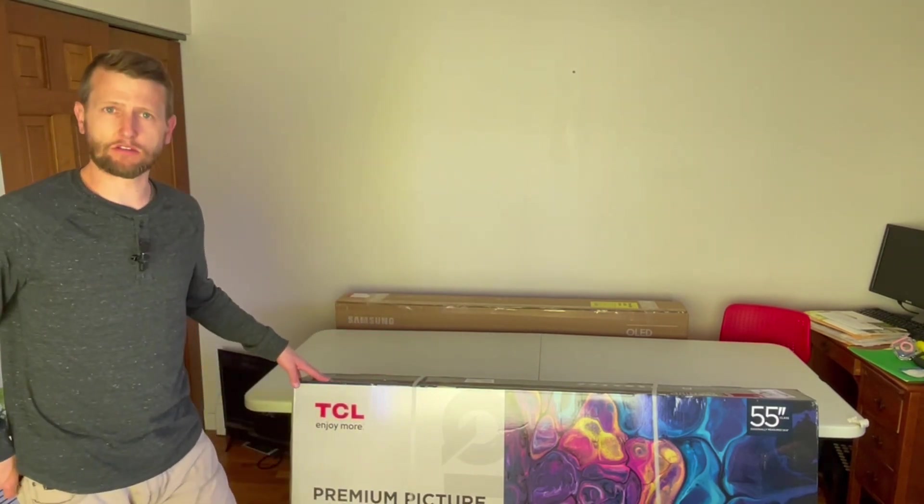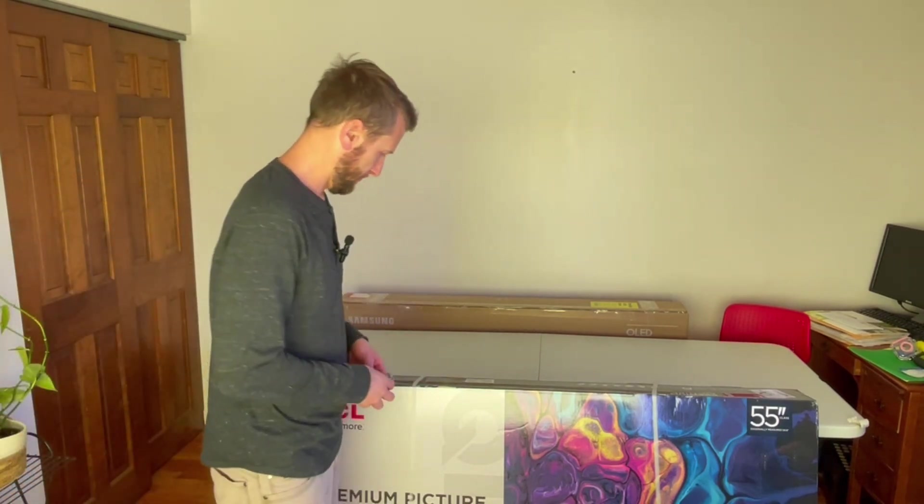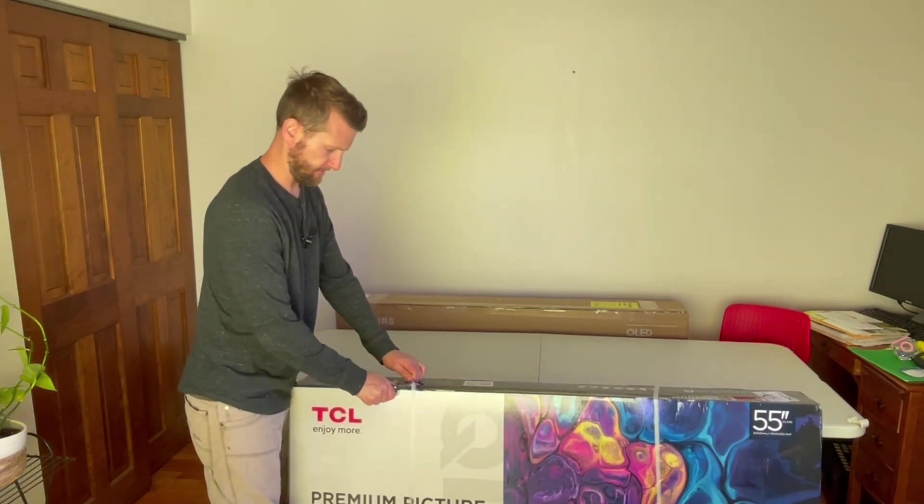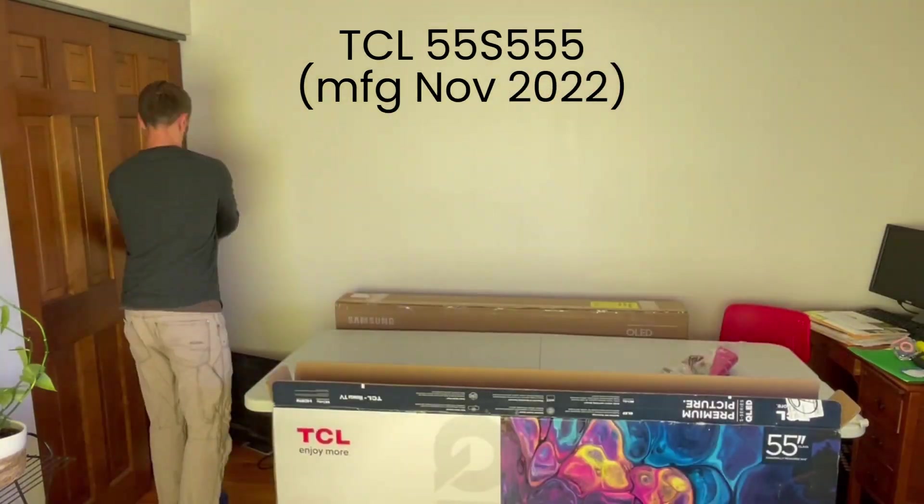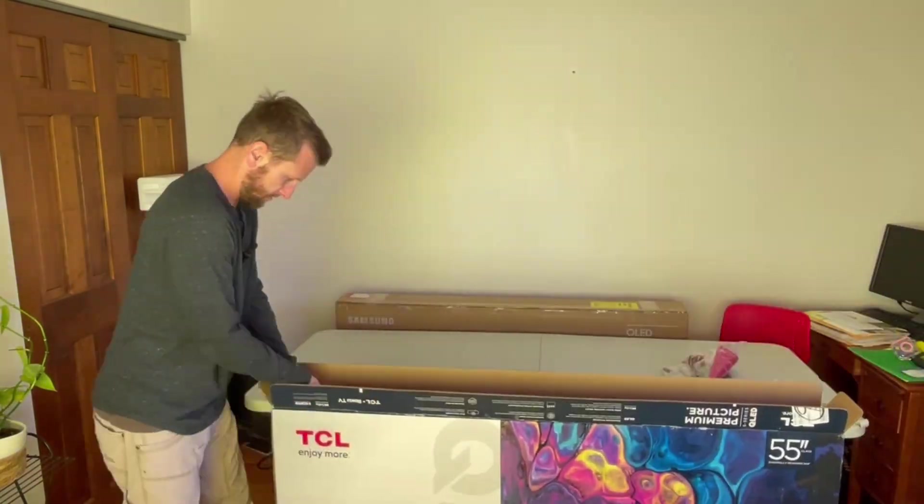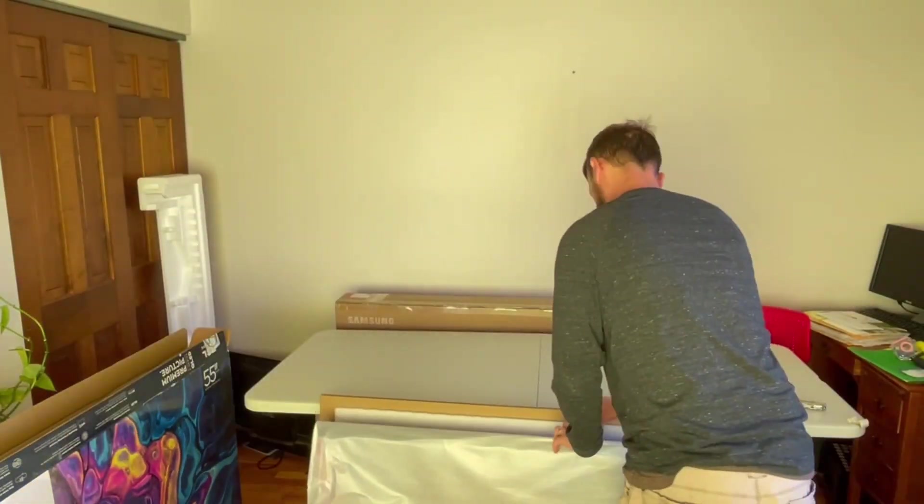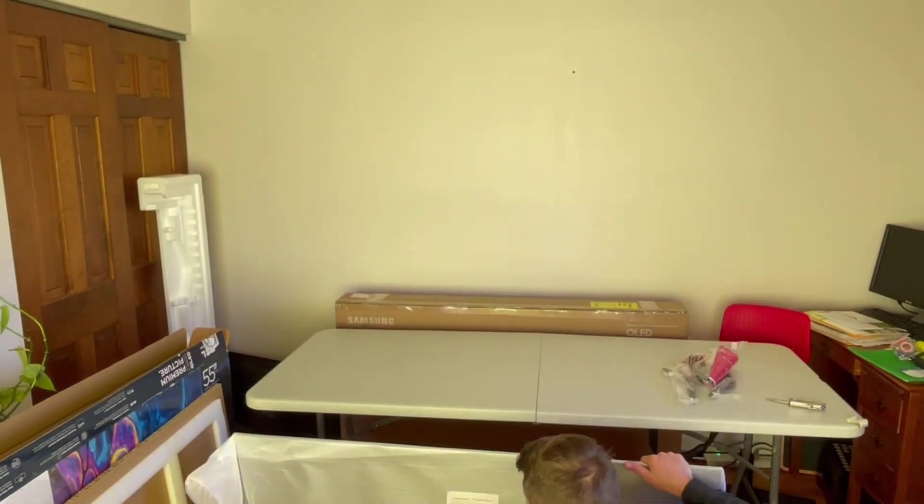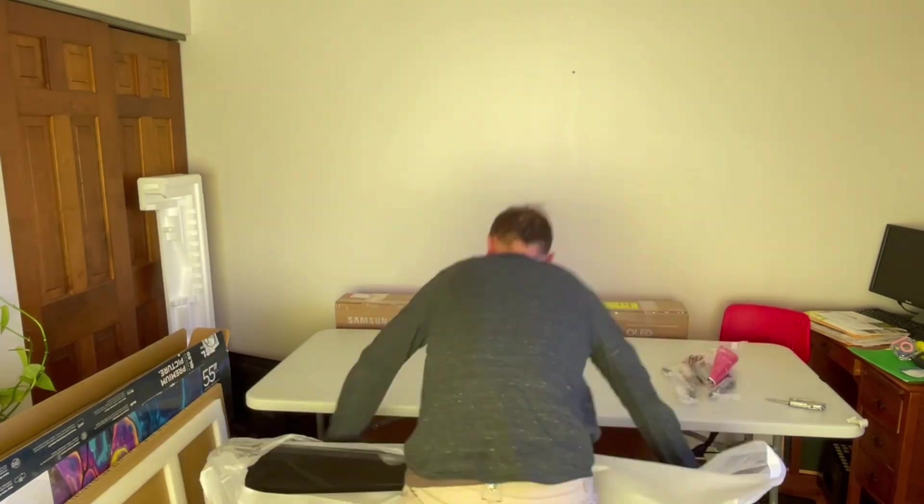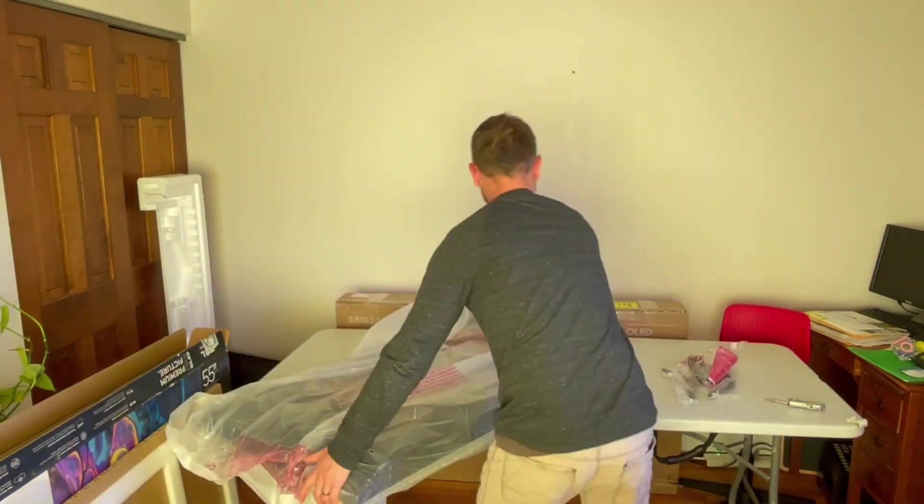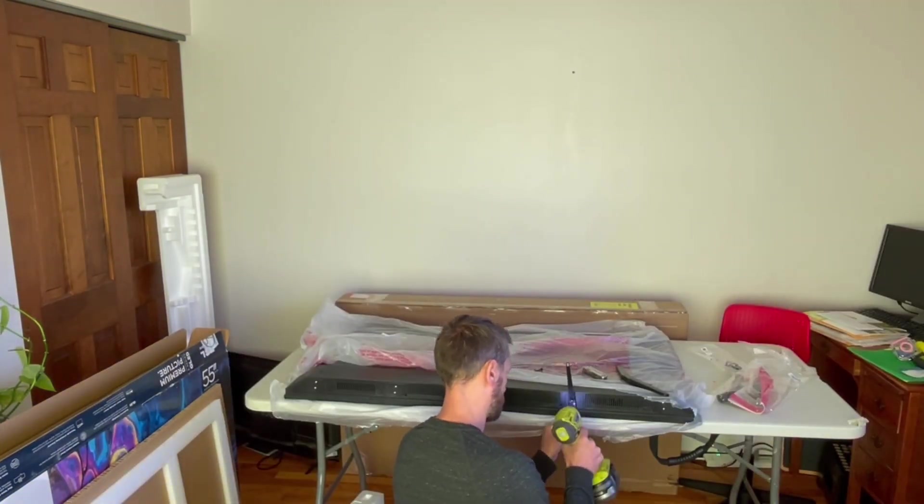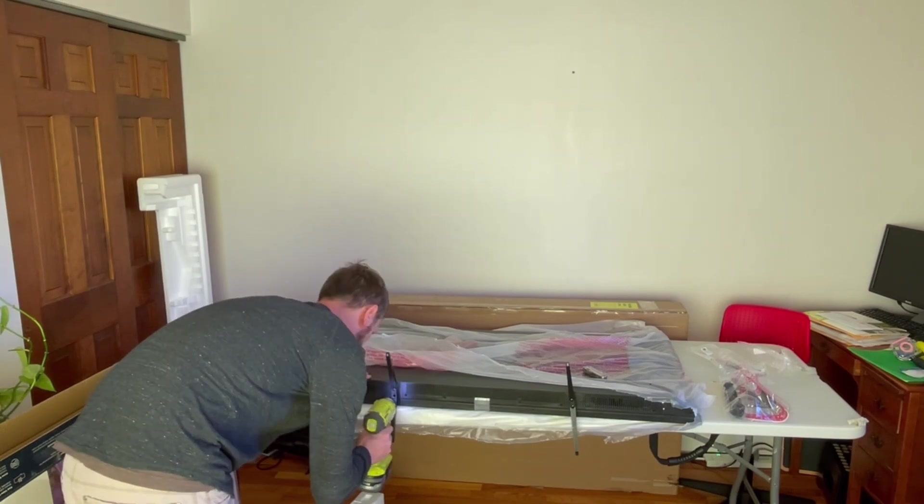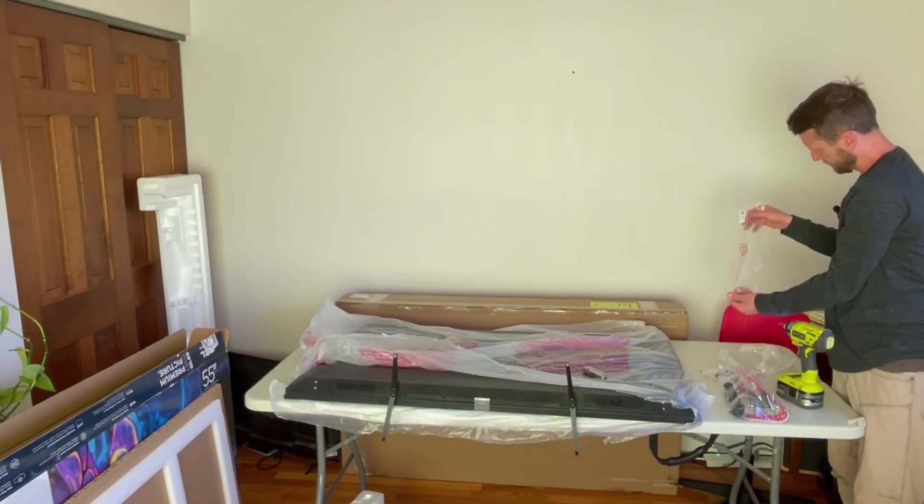Today we're going to take apart this TCL QLED TV, it's a 5 series. So let's start unboxing. This is a brand new TCL TV, it's an S555, manufacturing date according to the TV is in 2002, so it could be a 2003 model year TV. It was actually purchased for under $500, maybe even under $400 at right around Super Bowl time. So this is a pretty good TV to get for less than $400.